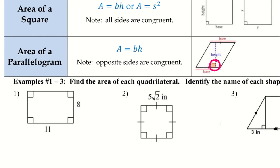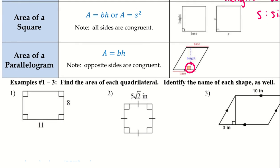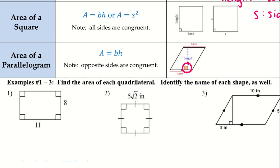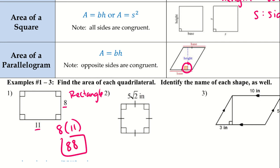For problems 1 through 3, find the area of each quadrilateral and identify the name of each shape. For number 1: since the sides are different, this is a rectangle — it also has 90-degree angles. So the area is 8 times 11, giving an area of 88.